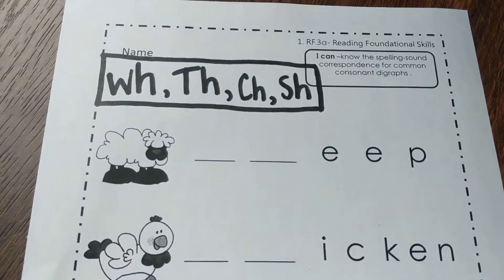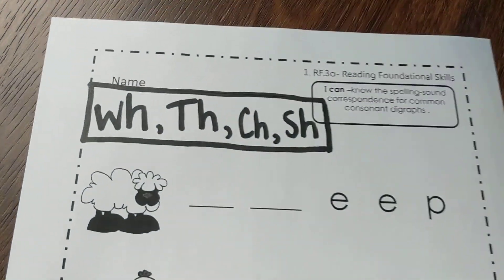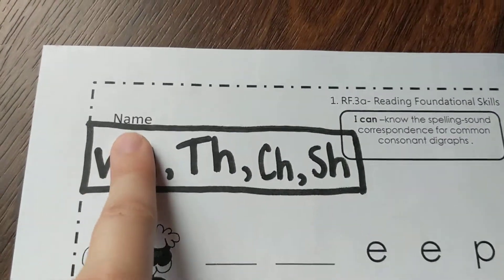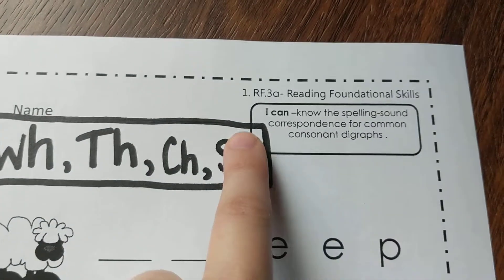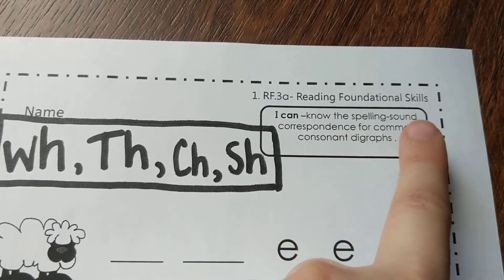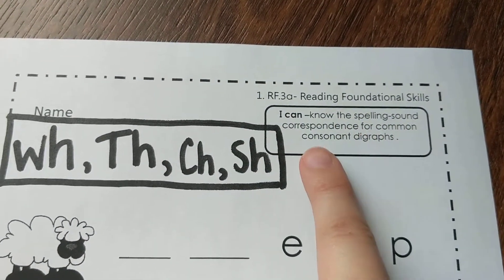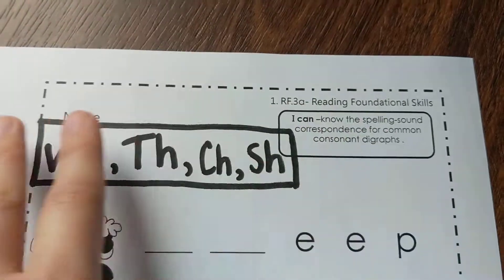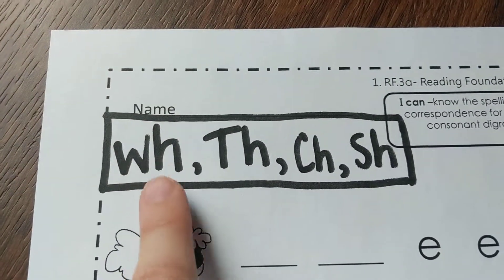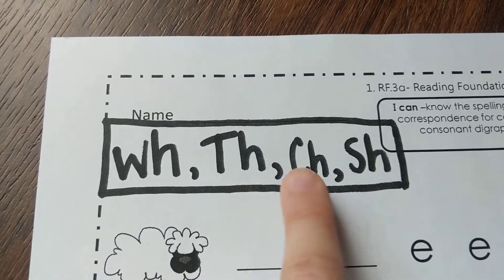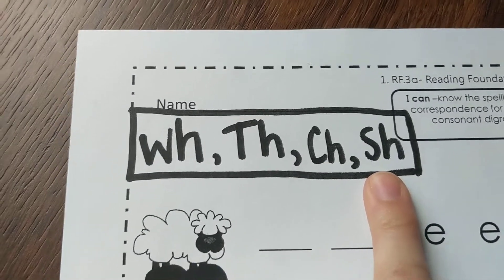This is your A-plus paper for week number three. Please put your name at the top. Today we know the spelling-sound correspondence for common consonant digraphs. Our digraphs today are W-H, T-H, C-H, and S-H.